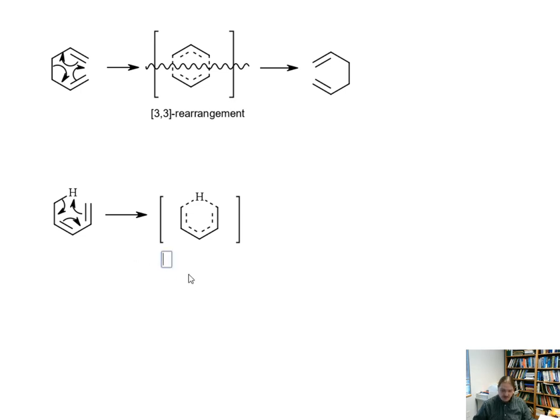But this is a [1,5]-rearrangement. One of the pieces has one atom, the hydrogen, and the other piece has five. Or not the cyclohexadiene ring, but the all carbon piece has five.